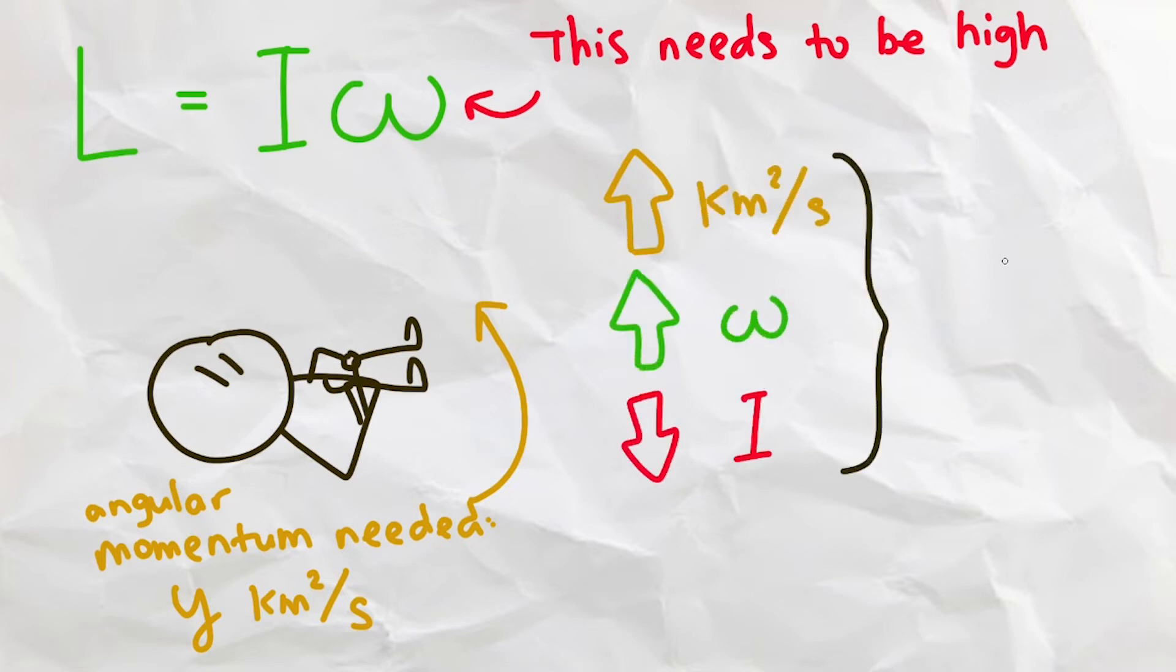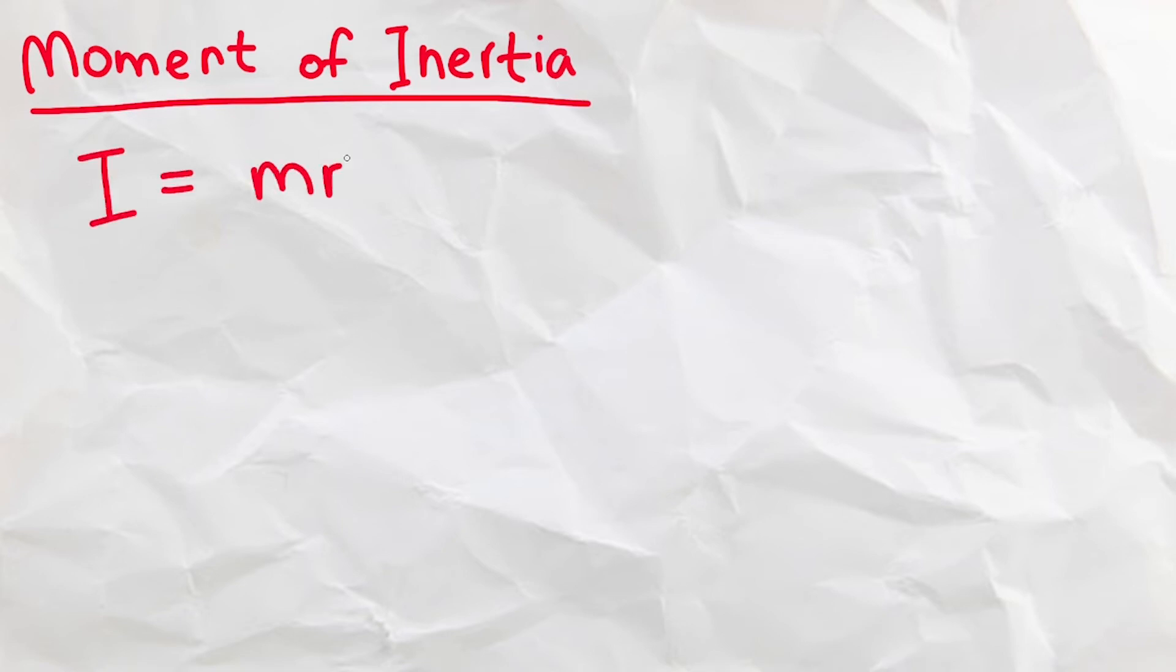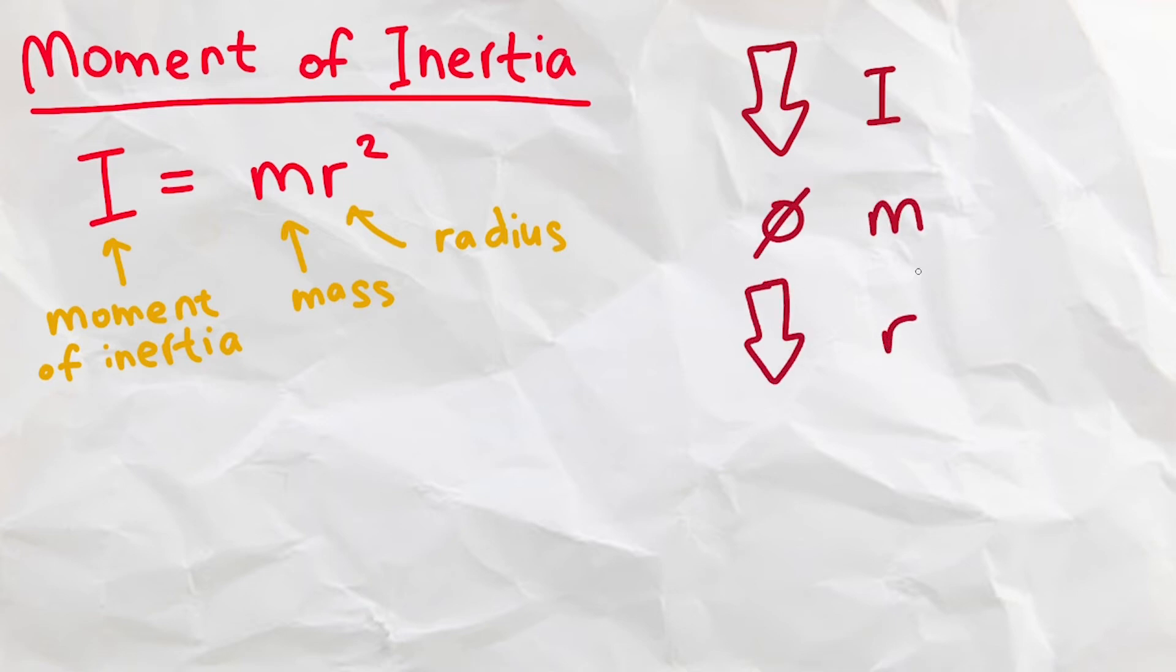This means that we have to somehow decrease our moment of inertia, but how do we achieve that? The moment of inertia has its own formula as well, which is I equals mr², where I is the moment of inertia, m is mass, and r is radius. We can't really change our mass, so the only thing we can do is to decrease the radius, which will decrease the moment of inertia.